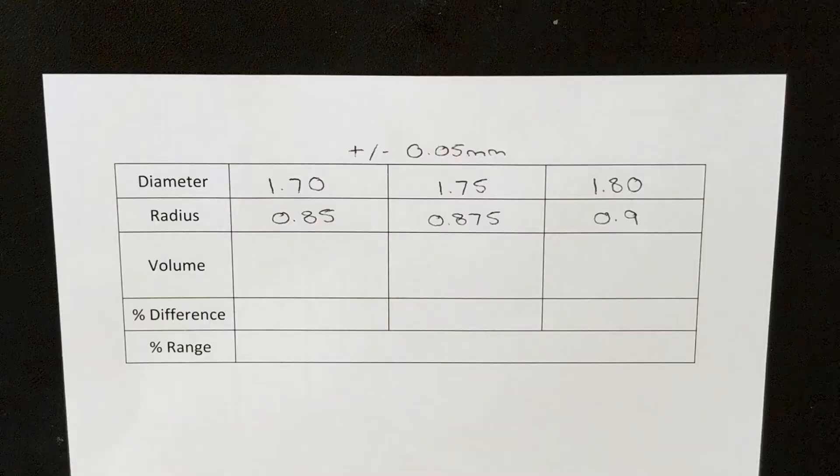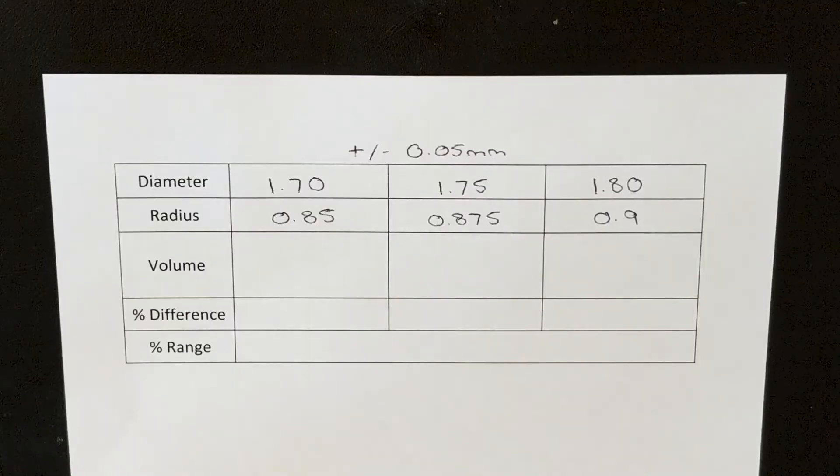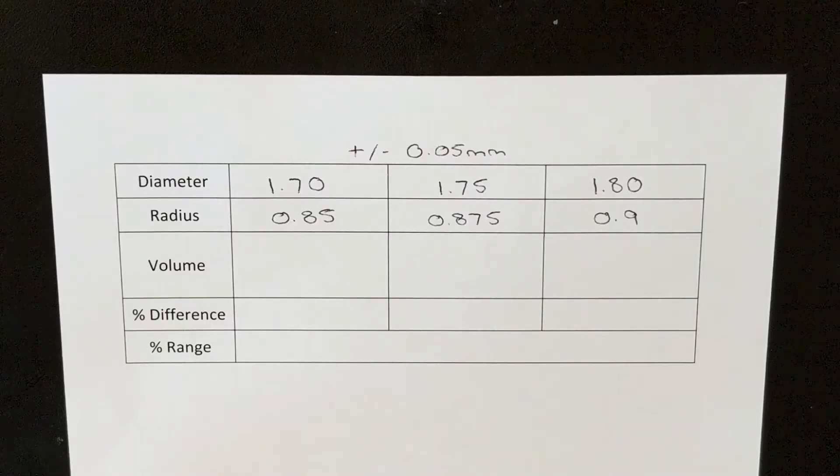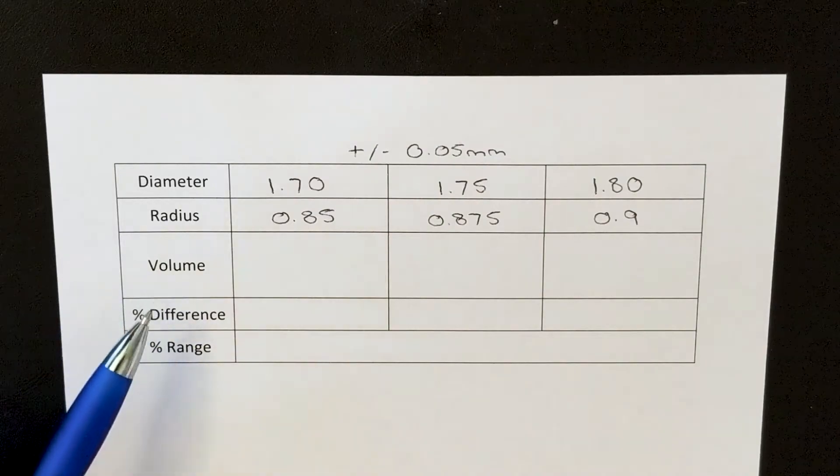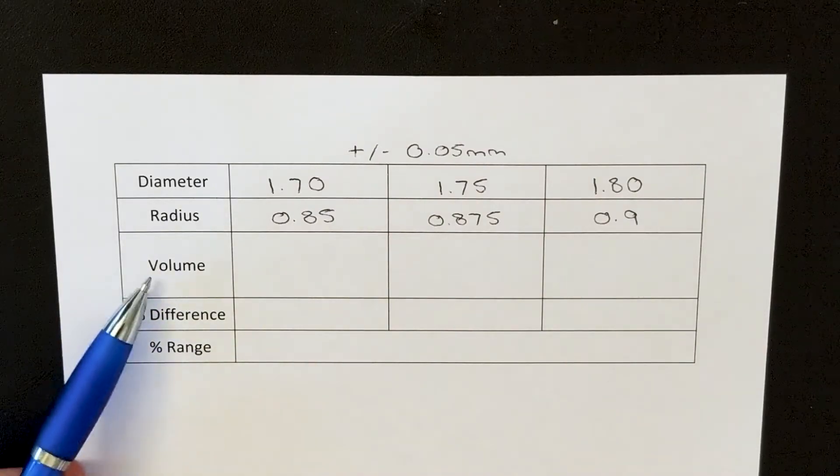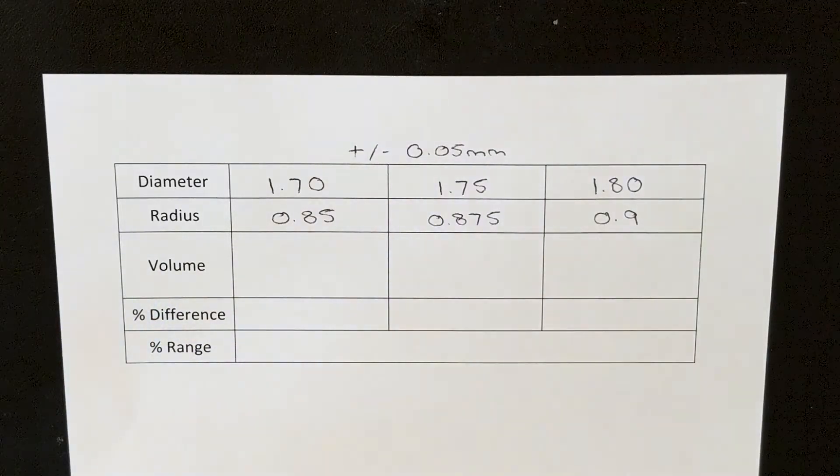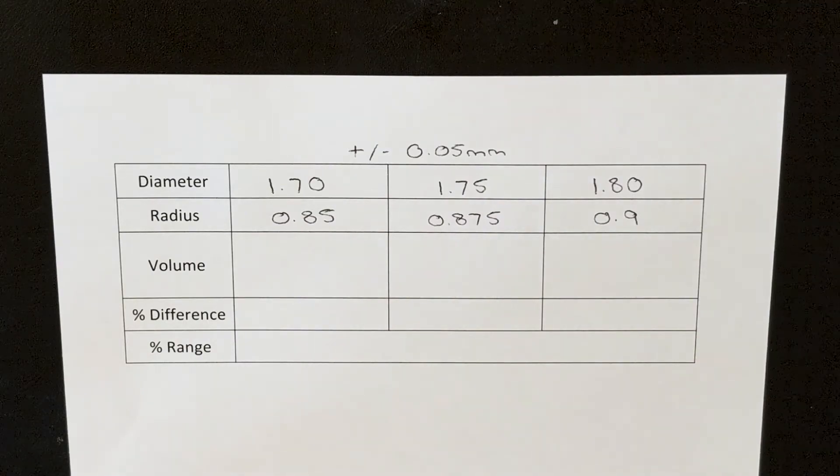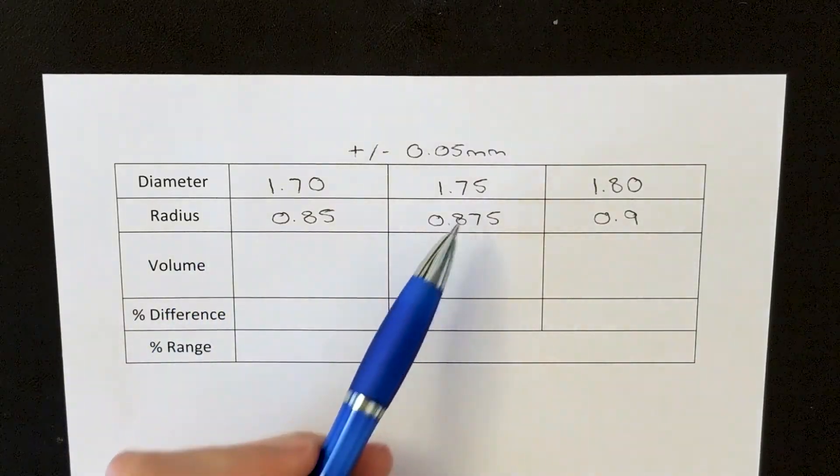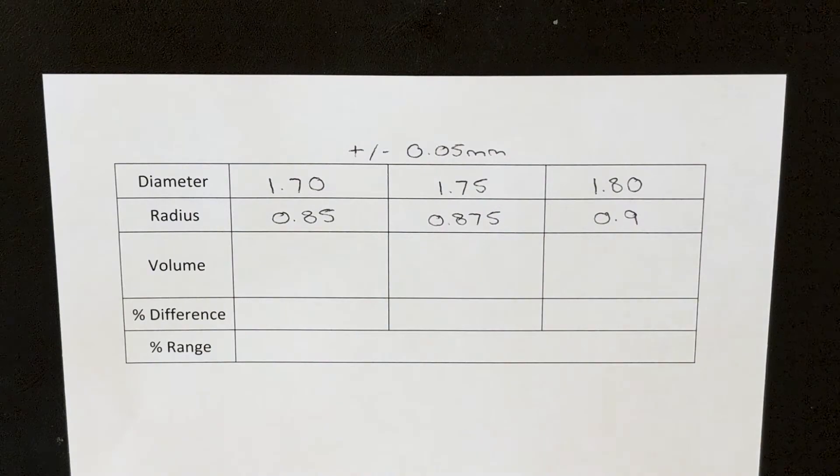we're actually going to have to do some maths first. To calculate how much we're under or over extruding by, we actually have to look at the volume, not just the diameter, so how much plastic is really being fed through the nozzle. So I'm going to calculate the volume in a 1mm length of 1.7, 1.75 and 1.8mm filament.